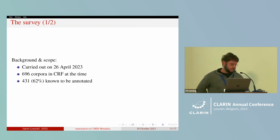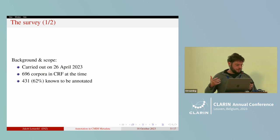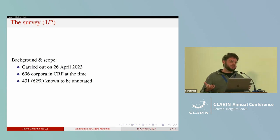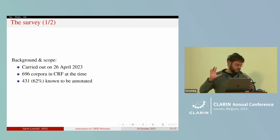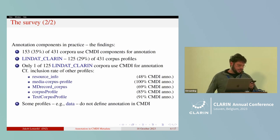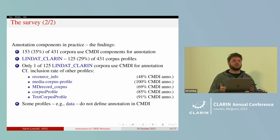What I did for this presentation is survey how the corpora of CLARIN resource families availed themselves of CMDI annotation components. This survey was carried out at the end of April this year when there were almost 700 corpora overviewed in our families. For 62% of them we know that they are annotated in one way or another. I looked at all the metadata records of these corpora to see whether annotation is documented in CMDI components or somewhere else. It actually turns out that only about a third of the around 400 corpora use CMDI components to document annotation, while the rest document annotation elsewhere, usually as part of the free text description.